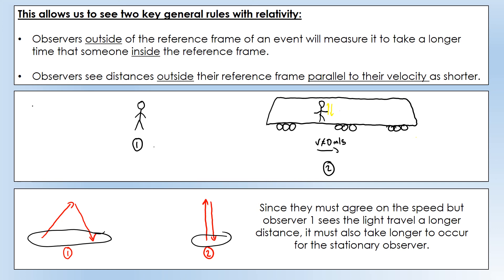Special relativity essentially says observers will agree on the speed of light, but they'll both measure different times and different distances depending on what they as the observer are doing. That's the introduction I want to give to special relativity. We'll move on to look at length contraction and time dilation in more equation-based form in the next video. Thank you very much for watching.